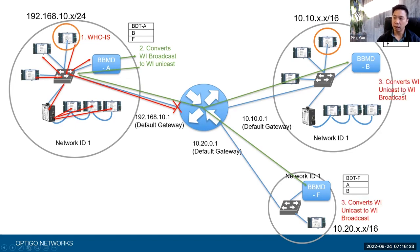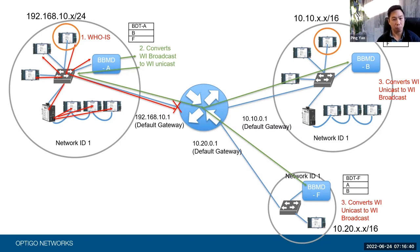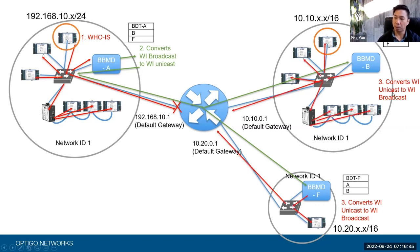B will catch it and say: now I've got to do the reverse function. I'm going to take this unicast message, convert it back into broadcast, and dump it on my network. It will convert it back into broadcast and send it to all the devices on this network. Again, it will reach the IP router, but the IP router will block it. Voila — this is what a BBMD does.